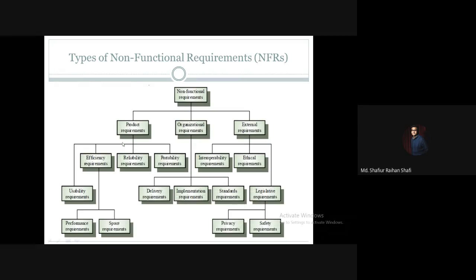Product requirements can be further classified into usability requirements, efficiency requirements, reliability requirements, and portability requirements. Efficiency requirements can be further classified into performance requirements and space requirements. So usability, efficiency, reliability, and portability all indicate product requirements.